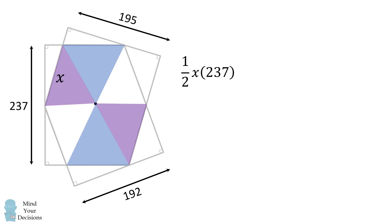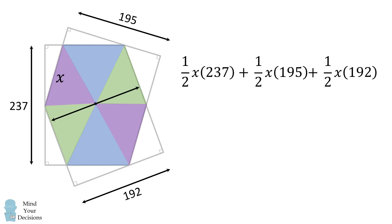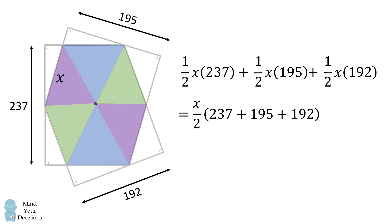We can do a similar construction for the next two triangles, and we'll get the sum of their areas equal to one-half x multiplied by 195. We do the same for the final two triangles, getting a sum equal to one-half x multiplied by 192. Factoring out x over 2, the total area of the hexagon equals x over 2 multiplied by the sum of all these heights. So all that remains is to solve for x.